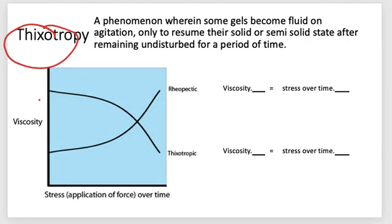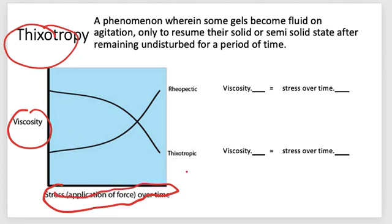We have a graph showing viscosity and stress application over time. Thixotropic liquids decrease in viscosity as stress over time increases — viscosity decreases as stress over time increases.